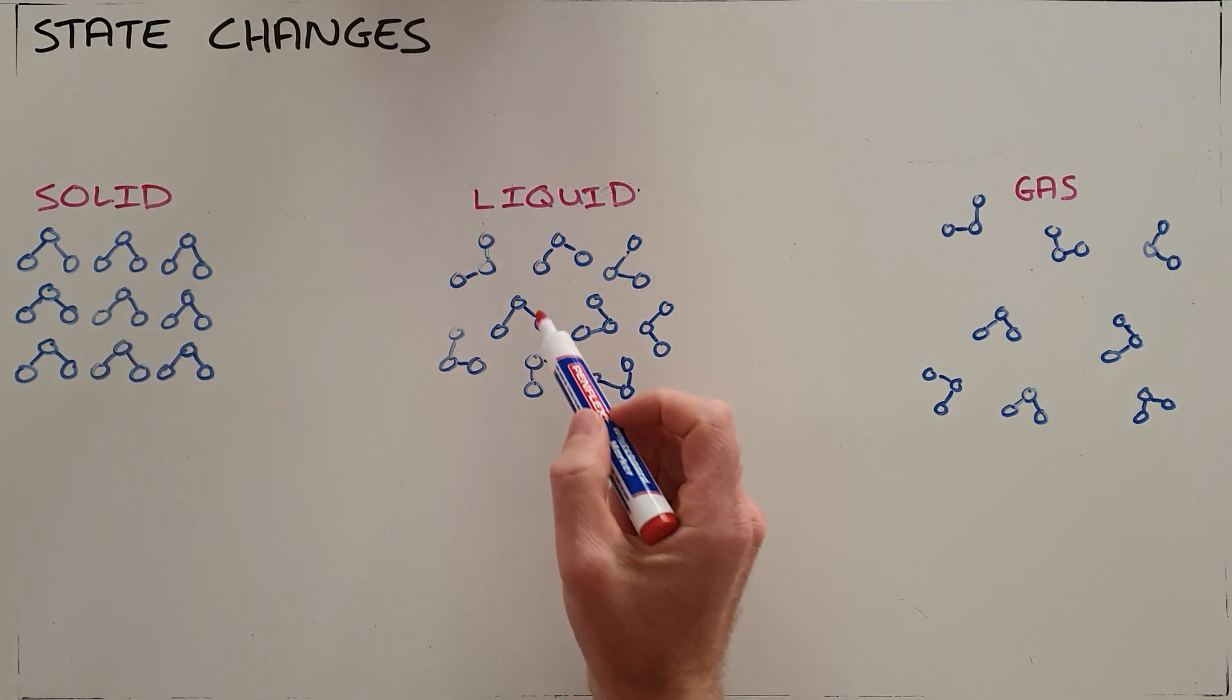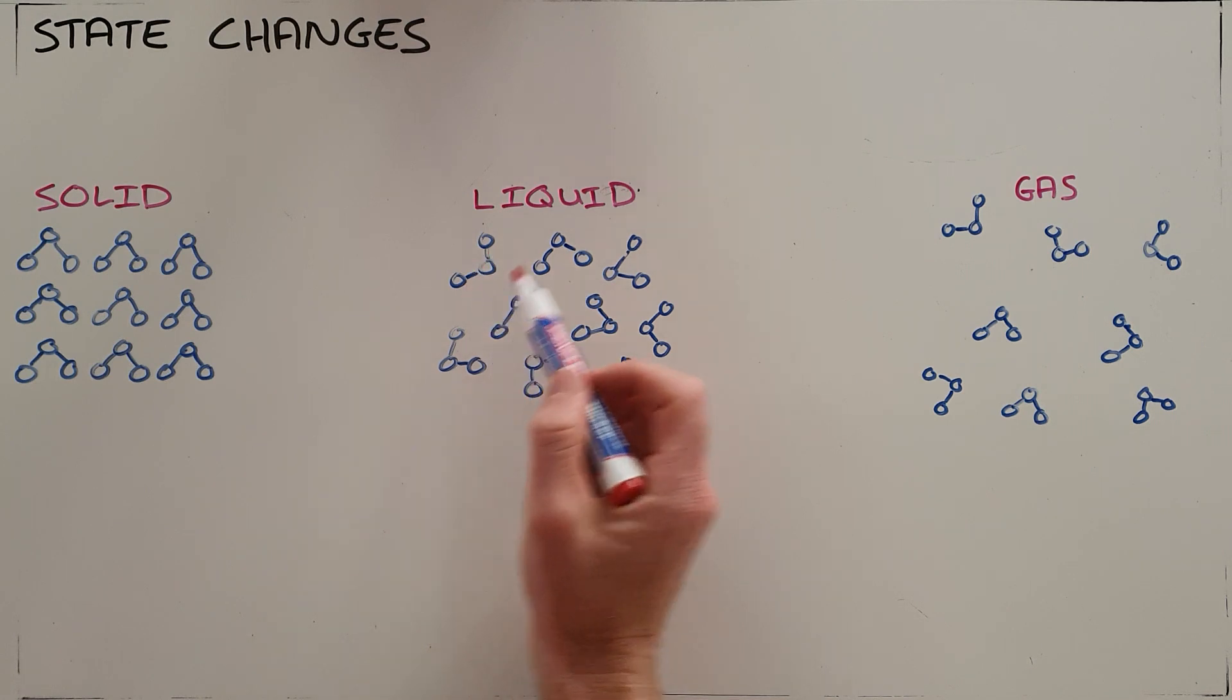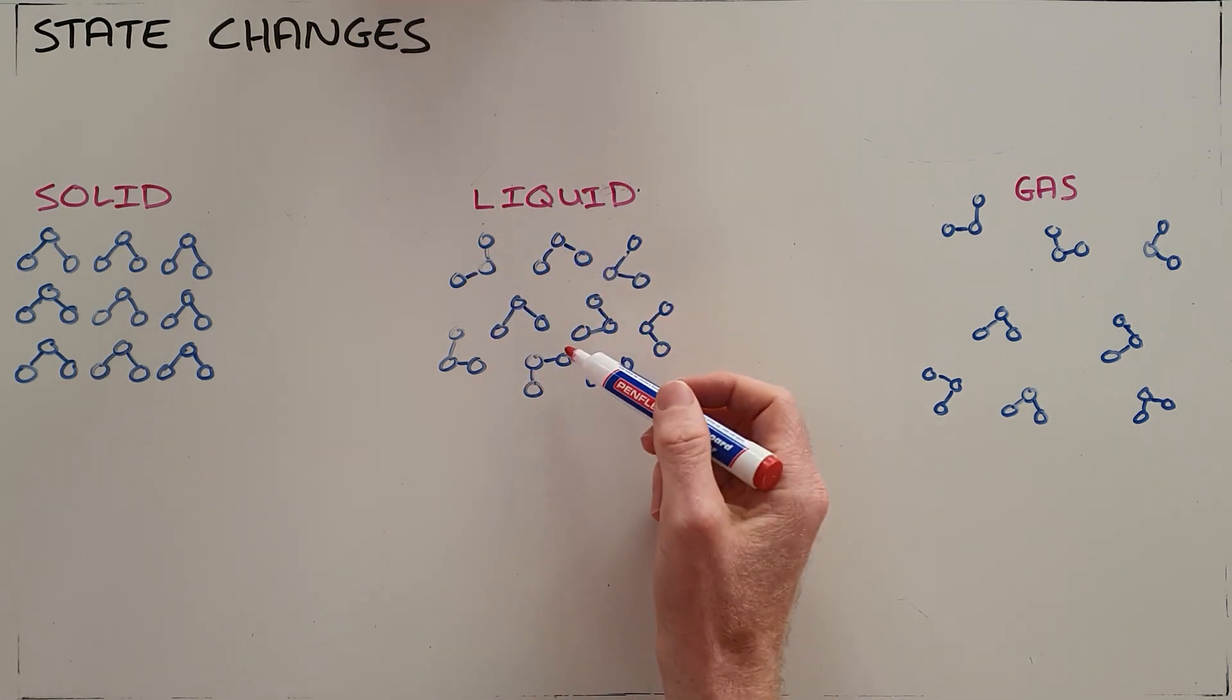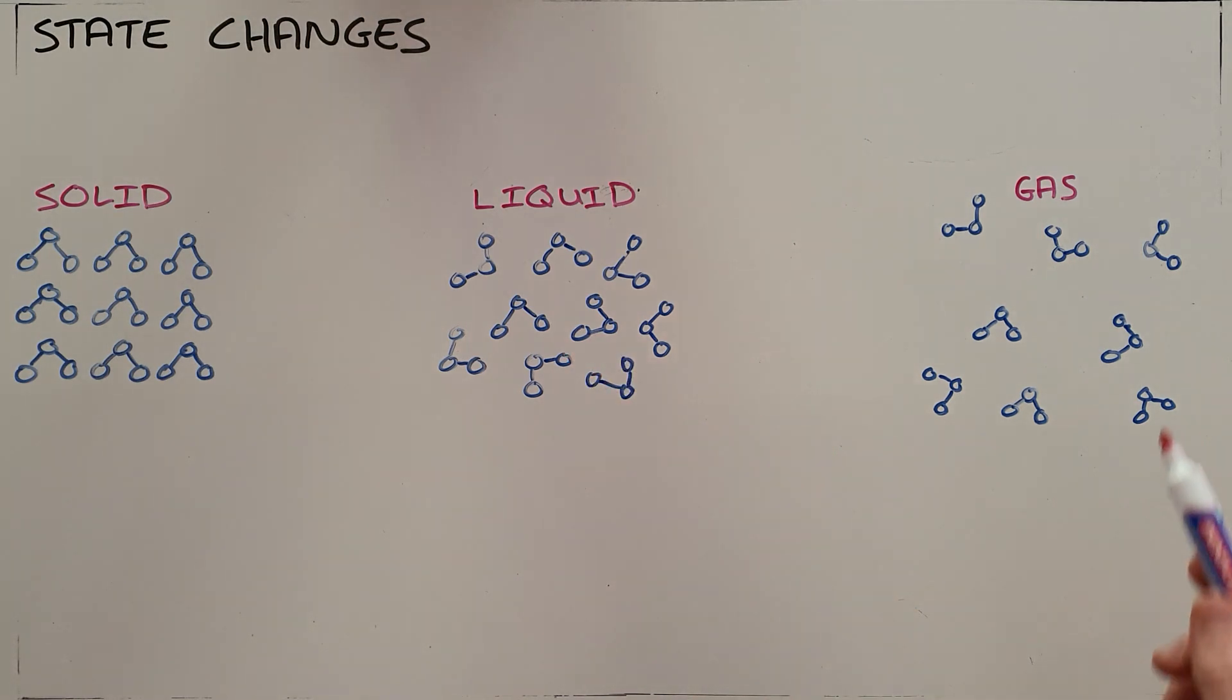There is the liquid state where the particles are not neatly arranged but still fairly close together, but they are able to move around and over each other. Then there is the gaseous state where the particles are very far apart and move almost freely or independently of each other.